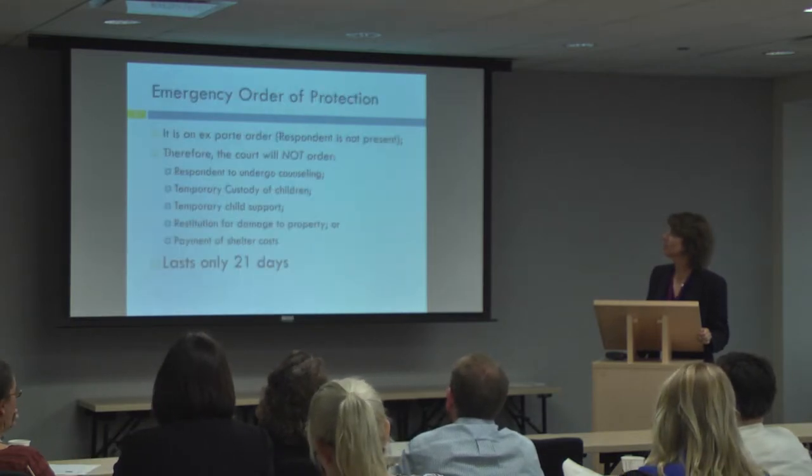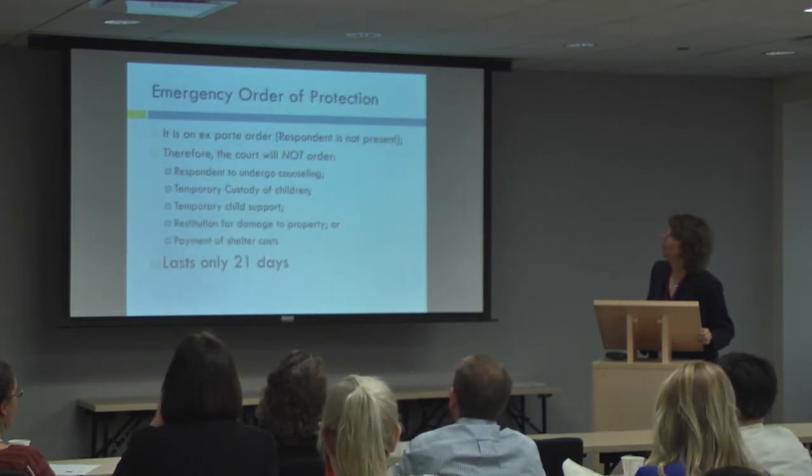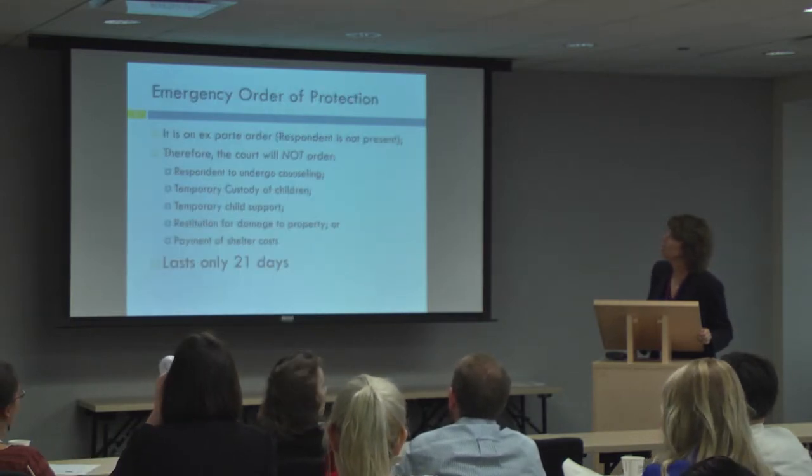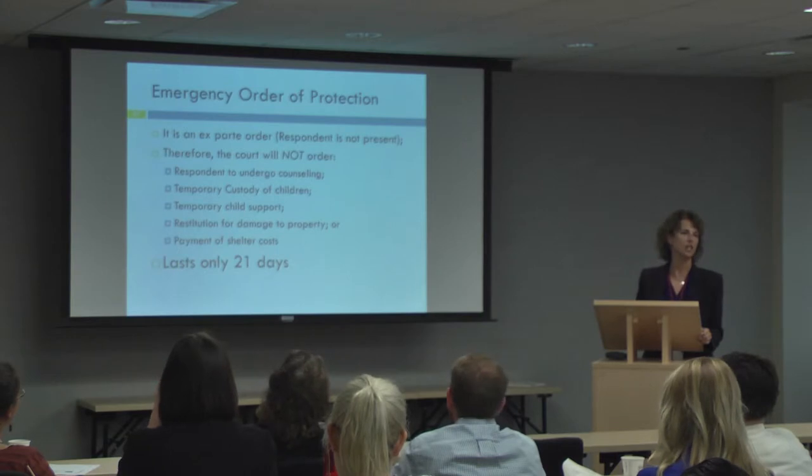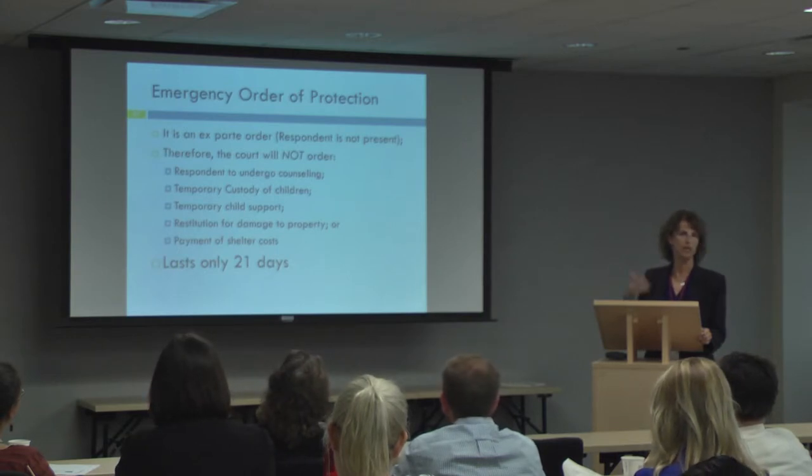When a court is deciding how to allocate parental responsibilities — decision-making and parenting time — the court must look at what is in the best interest of the child. Factors listed in the statute include the wishes of the parents and children, the relationships between the children and their siblings, prior agreements of the parties, distance and physical violence in the relationship, and the willingness of each parent to encourage a relationship between the child and the other parent. A parent who is more willing to encourage that relationship may get more decision-making and parenting time.